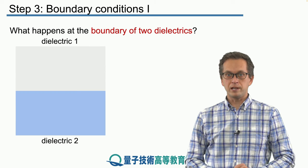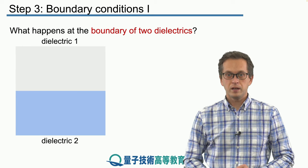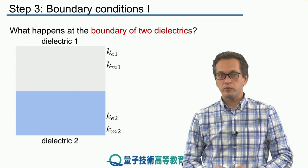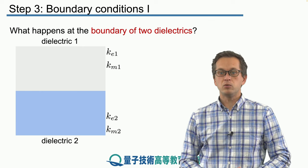So here are our two dielectrics: dielectric one at the top and dielectric two at the bottom. In dielectric one we've got our coefficients Ke1, Km1, and dielectric two Ke2, Km2.